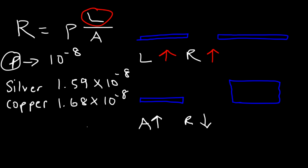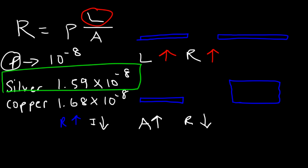Copper has a higher resistivity than silver, so copper has more resistance and conducts electricity a little less efficiently than silver. Resistivity and conductivity are inversely related: because copper has higher resistivity, it's less conductive; because silver has lower resistivity, it's more conductive. So silver is a better conductor than copper. Materials with low resistivity are good electrical conductors — metals typically have resistivity on the order of 10 to the negative 8.